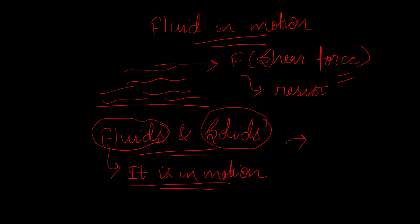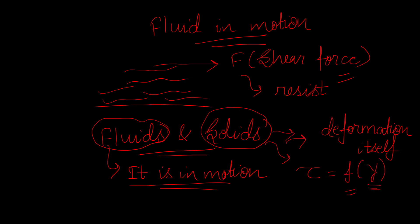For solids, the resistance to shear deformation depends on the deformation itself. That is, for solids, shear stress tau is a function of shear strain. But for fluids, this resistance starts when the fluid is in motion, so for fluids, shear stress is a function of the rate of shear strain.